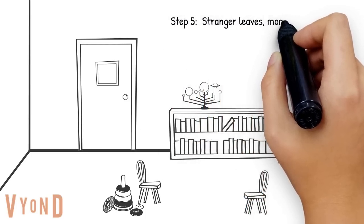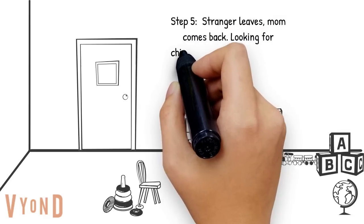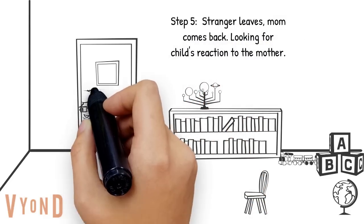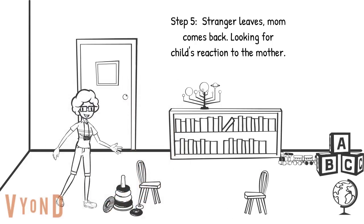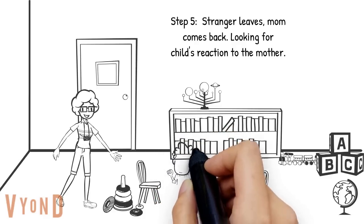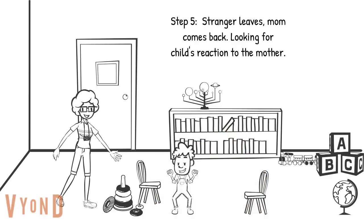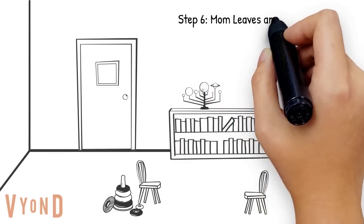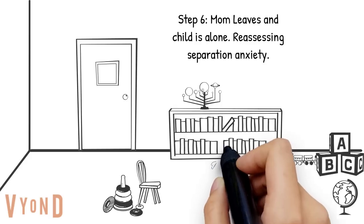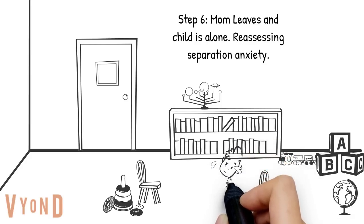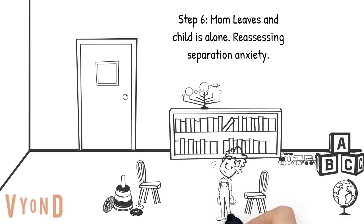In step five, the stranger leaves the room and the mother comes back. Researchers look at the child's reaction — does the child not care, is the child angry at the mother for leaving, or is the child happy to see her? In step six, the parent leaves the room and the child is left all alone, and researchers again look for separation anxiety — does the child start crying and get really distressed, or does the child not really care?